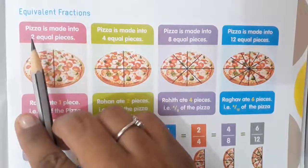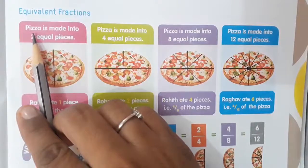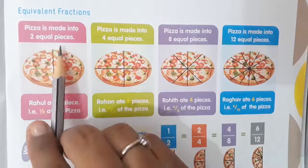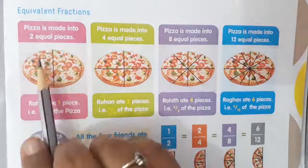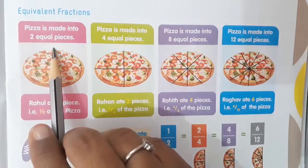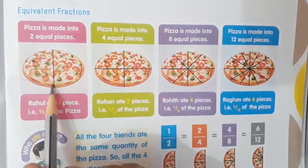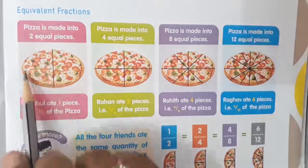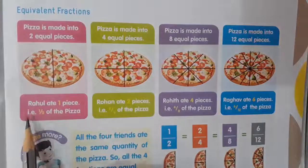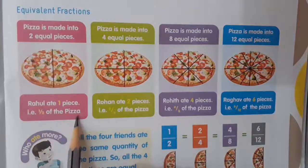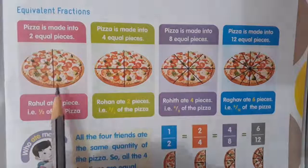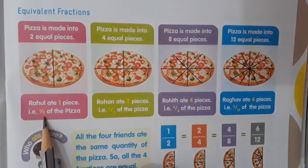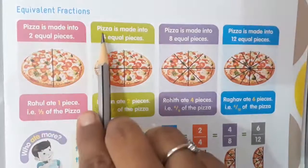See here, some examples are given. A pizza is made into 2 equal pieces. This is a full pizza made into 2 equal pieces. Rahul ate 1 piece. So that is 1 by 2 of the pizza. In fraction form we can say that is 1 by 2 of the pizza.